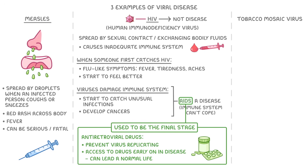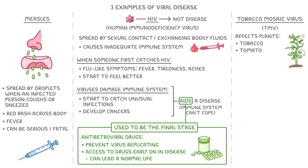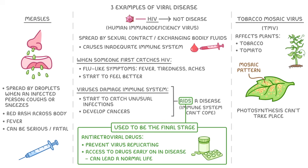The last viral disease we're going to cover is caused by tobacco mosaic virus, or TMV. This virus affects plants instead, but only certain species, such as tobacco and tomato plants. The reason it's called mosaic is because it discolours patches on the leaves, causing a mosaic pattern to form. The problem is that photosynthesis can't take place in these discoloured patches, and so overall the plant won't be able to produce enough sugars for proper growth.